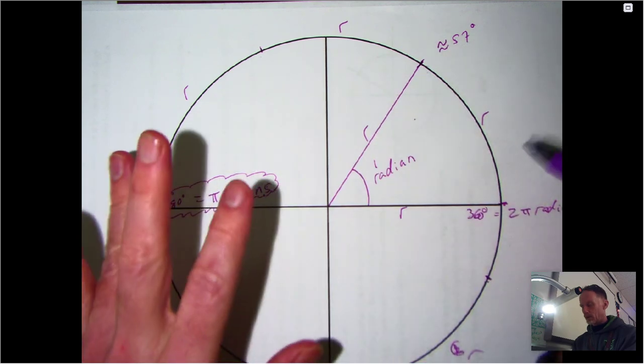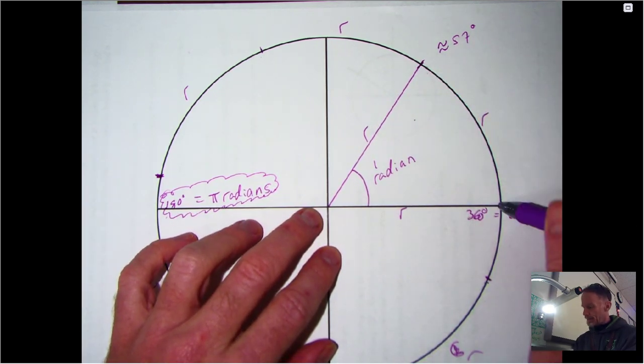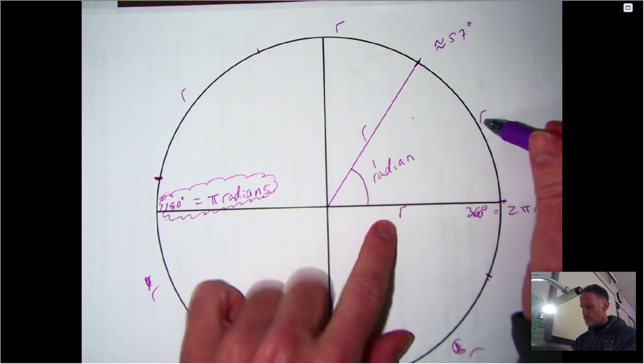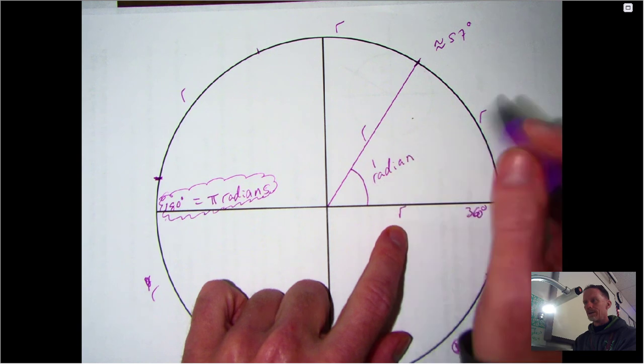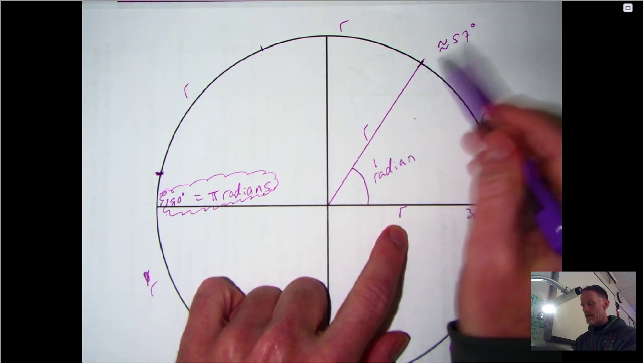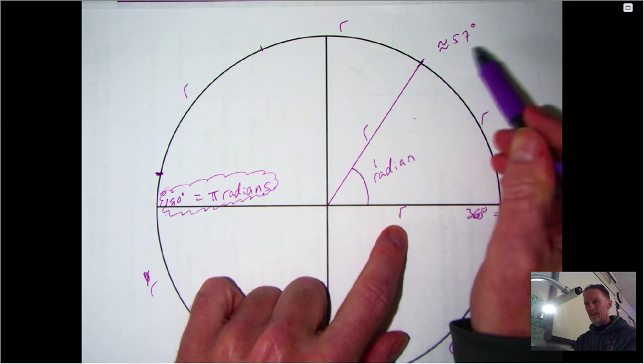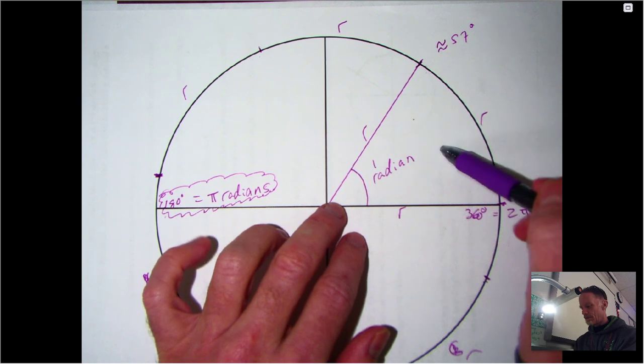I just made a mark and then drew another radius down to the center. Whenever that happened, it doesn't matter how big the circle is, but when the arc that the angle intercepts is equal to the radius length, we call that angle one radian. If you're curious, it comes out to be just a little bit over 57 degrees.